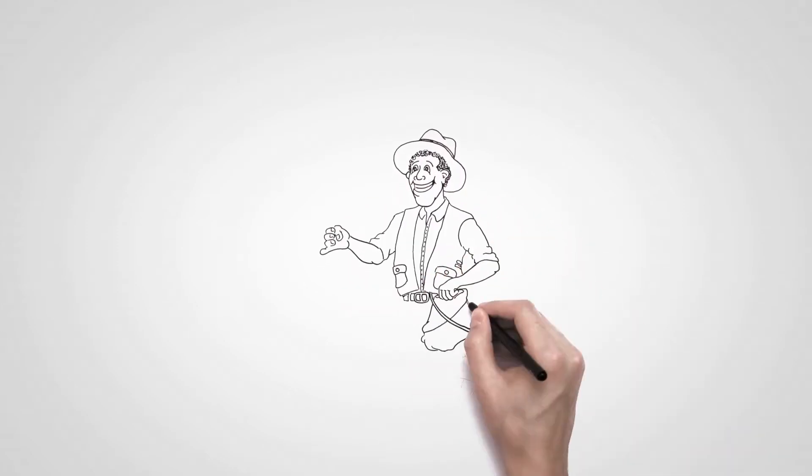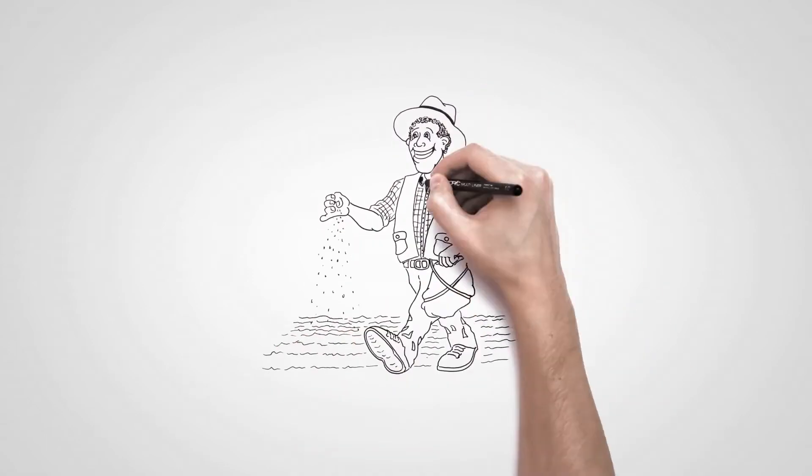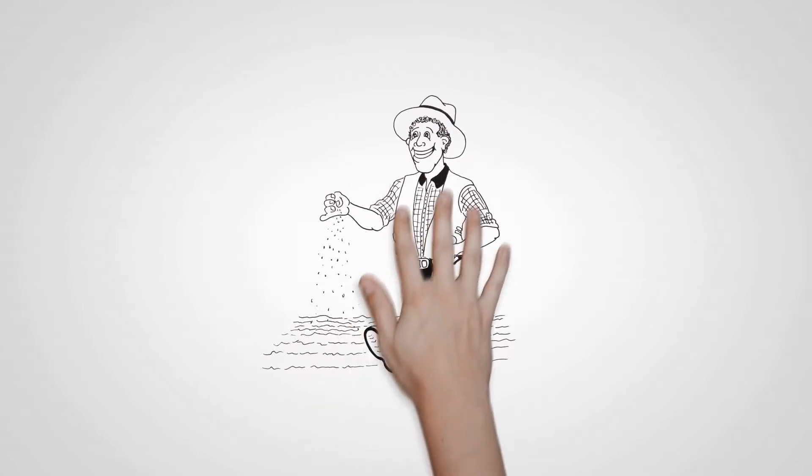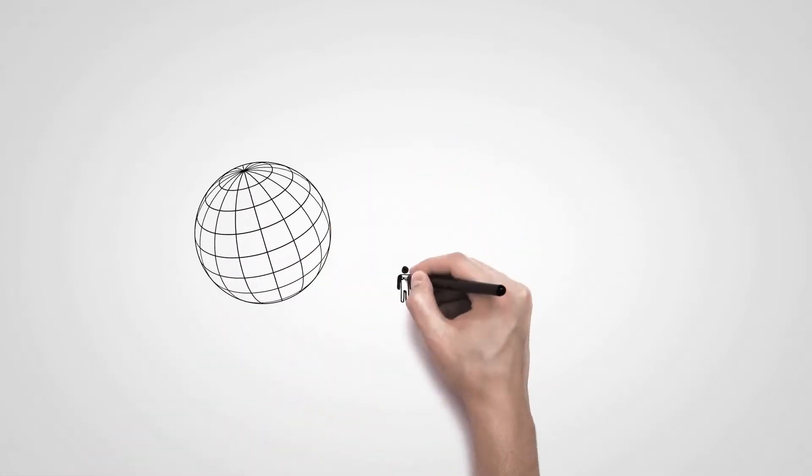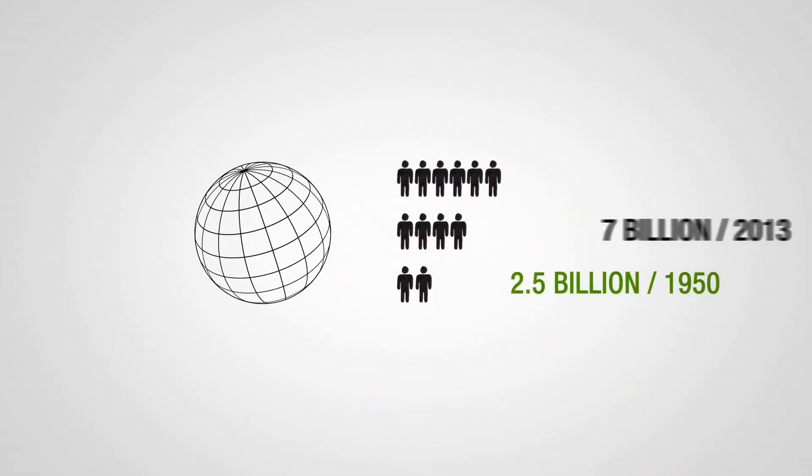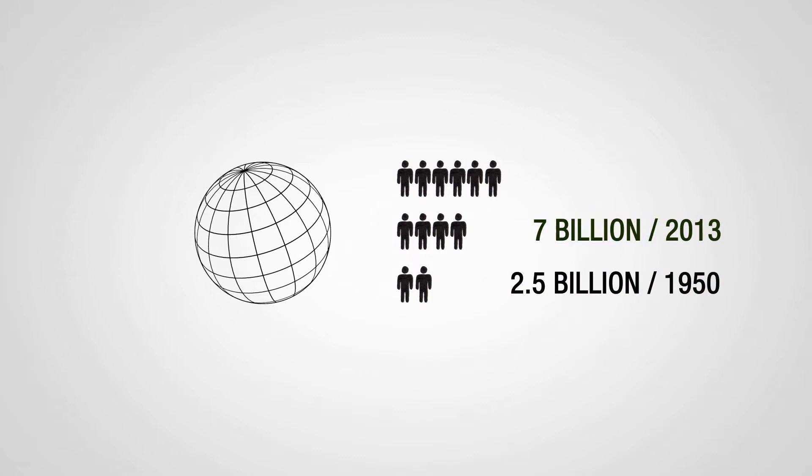Agriculture has been practiced for around 12,000 years and creates the basis for healthy nutrition. But this has led to explosive growth in the world's population, from 2.5 billion in 1950 to around 7 billion today and an estimated 9 billion by 2050.